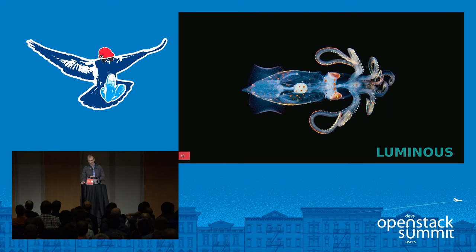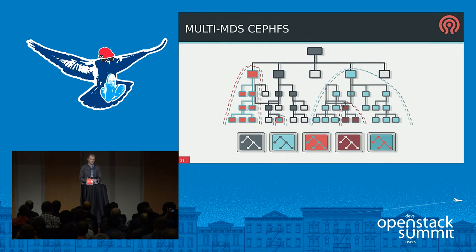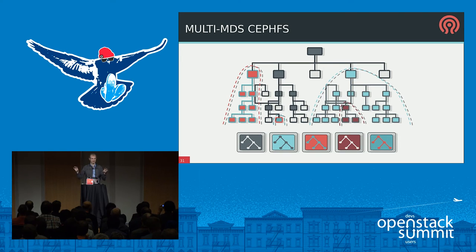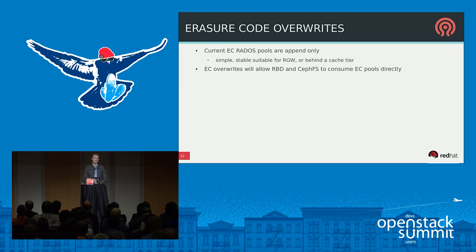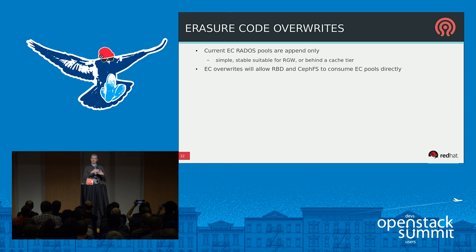Moving to Luminous, coming in the spring: the first big thing is that multi-metadata server in CephFS will finally be completely stable, enabling scale-out metadata for CephFS and filling in the last missing piece for a full scale-out story across object, block, and file. The other big thing in Luminous is erasure code overwrite support. RADOS pools have supported erasure coding for a long time, but the current implementation only allows appending to erasure-coded objects — sufficient for RADOS Gateway S3 workloads but not for RBD or CephFS which must modify existing objects.